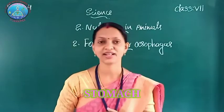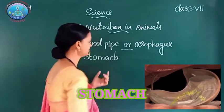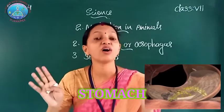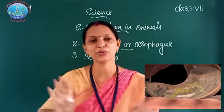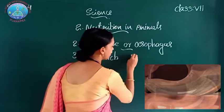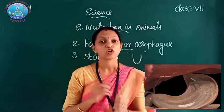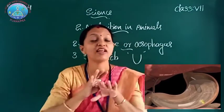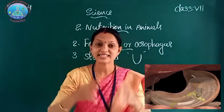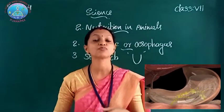The next organ is the Stomach — the third digestive organ. The stomach is a thick-walled bag shaped like a flattened U. One end of the stomach opens to the Food Pipe, absorbing food from it, and the other end opens to the Small Intestine.